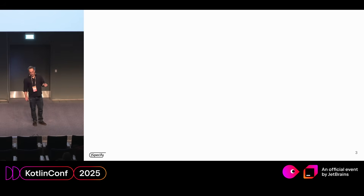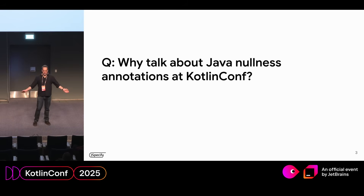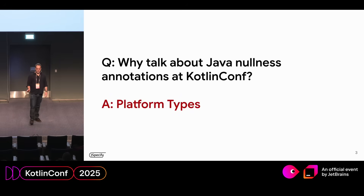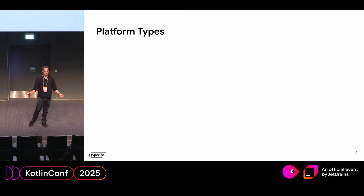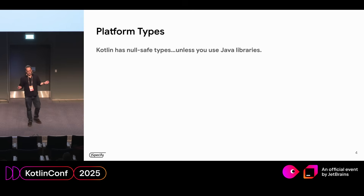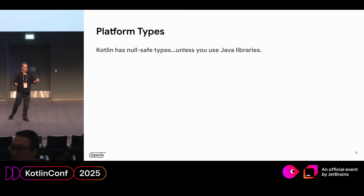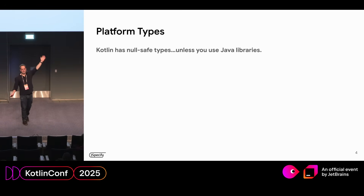The first question you might have is: why are we talking about Java Nullness Annotations at KotlinConf? It's not JavaConf. The short answer is platform types. Platform types — you know what they are. You hate them. Just a quick review: Kotlin has a null-safe type system, which is great, unless you have any Java libraries in your classpath.